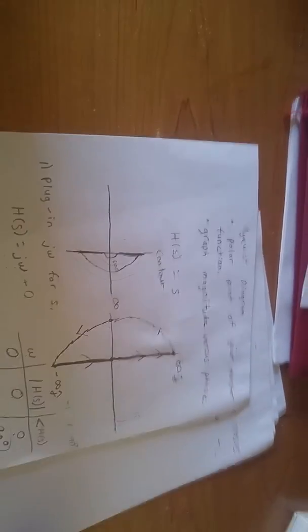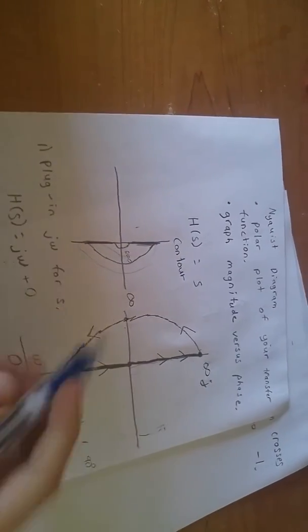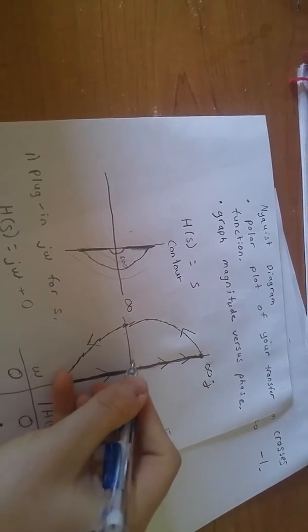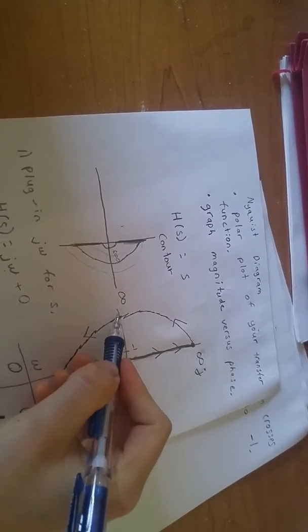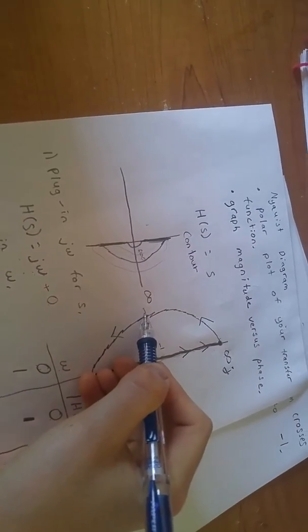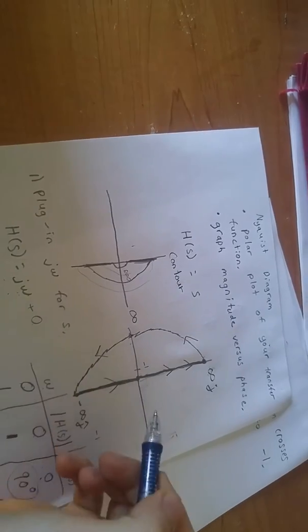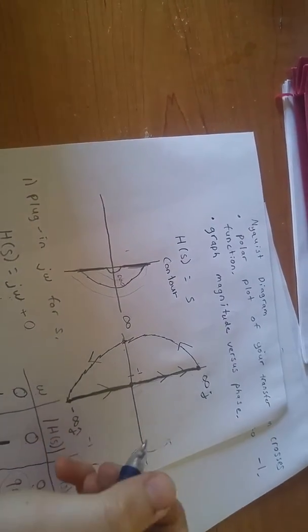What is my gain margin? Well, this is infinity, okay? This is negative 1. Is there any number that I can multiply infinity by to get to negative 1? No, not really.